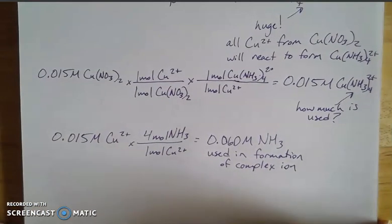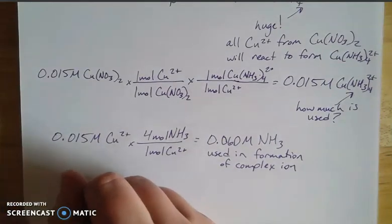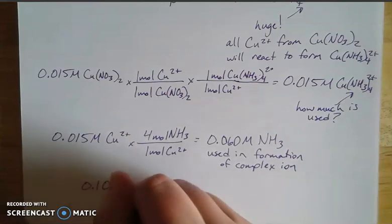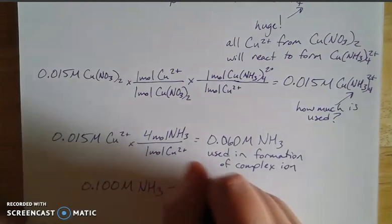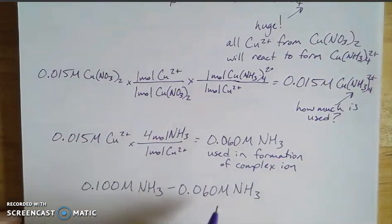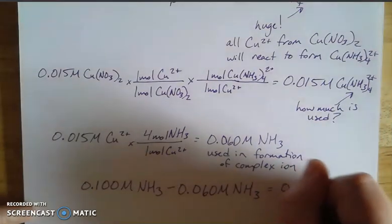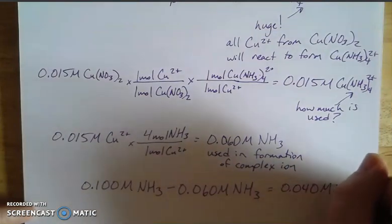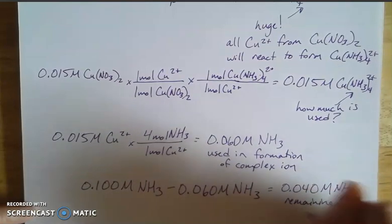Because we need an ICE box and we need to put together our equilibrium concentrations, I need to know how much was used. So I started with this molarity of my ammonia, the 0.1 that was given in the problem. I used up the 0.060 molar ammonia. I'm keeping my molarity units here. We could talk about it in terms of moles. We're just talking about it per liter of solution. And we could scale that up or down if we needed to.